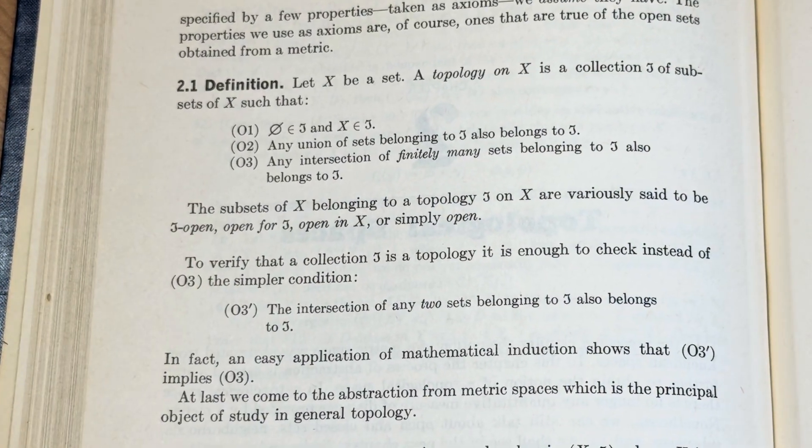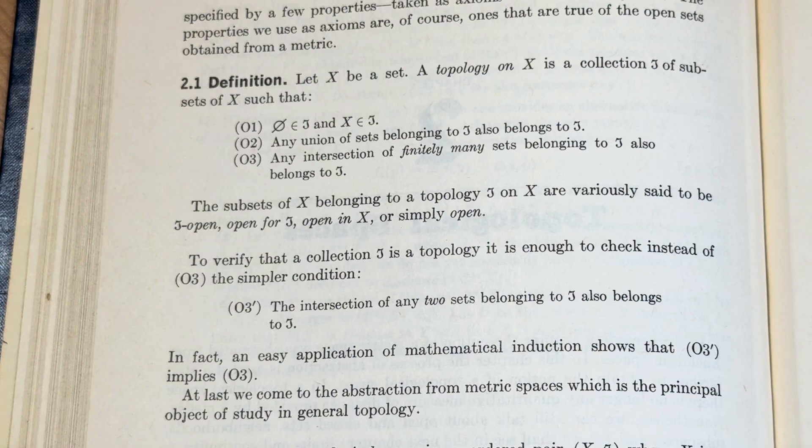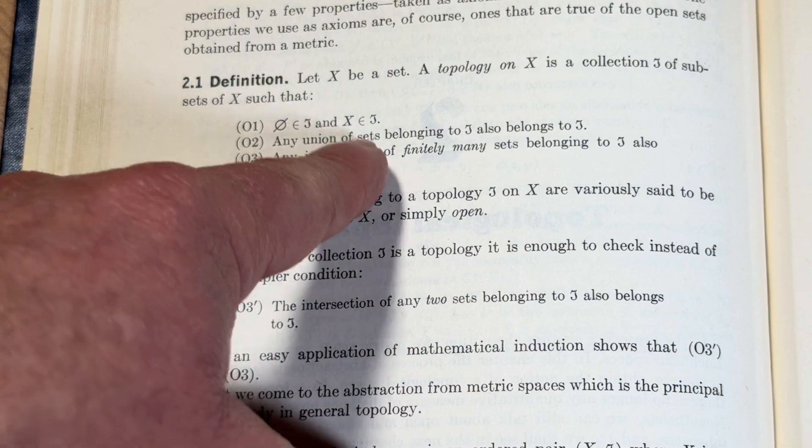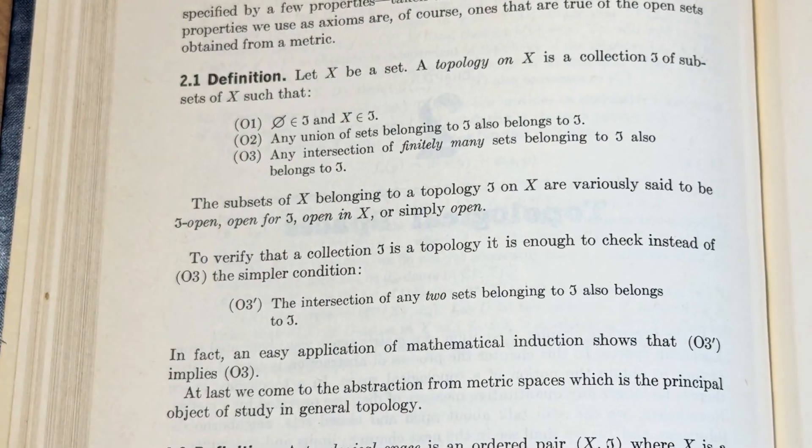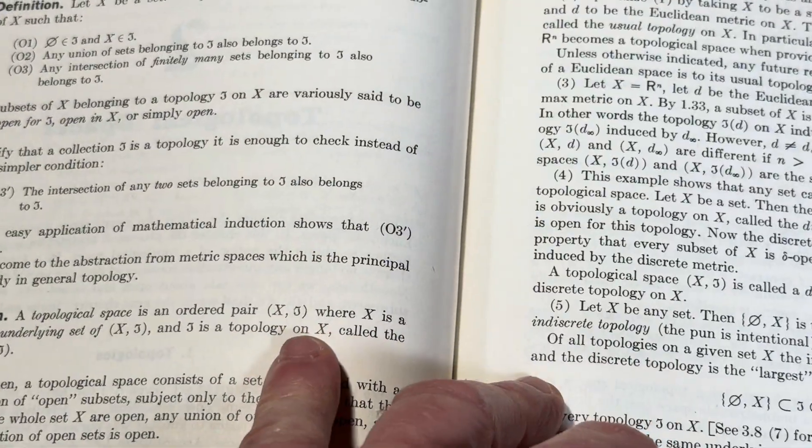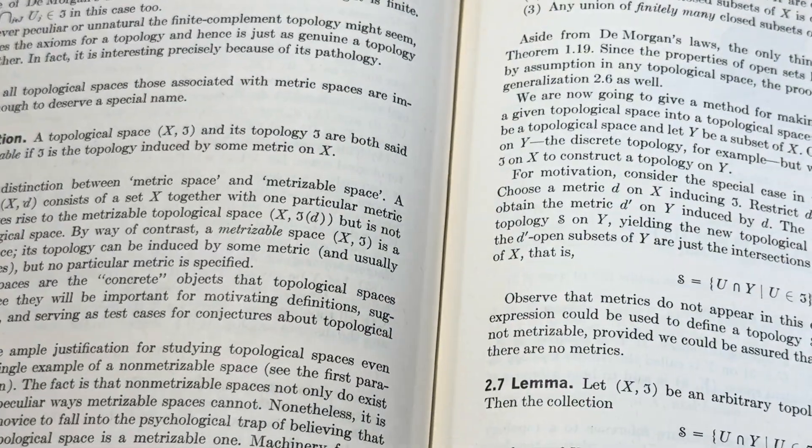So the elements of tau are called open sets, by the way. So basically, another way to say it is the union of any number of open sets is open, the empty set and the whole space are always open, and any finite intersection of open sets is open. If you have those conditions, then you have a topology.